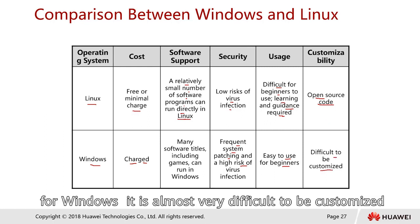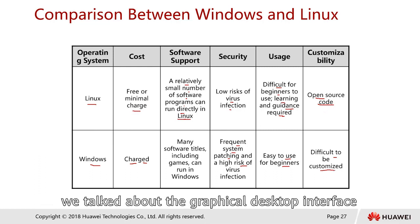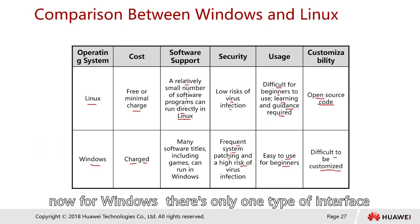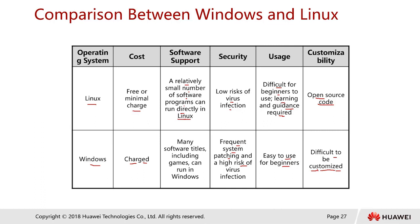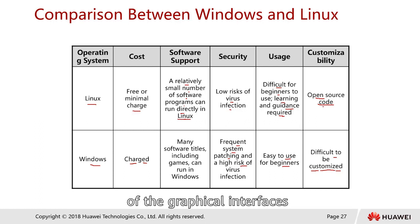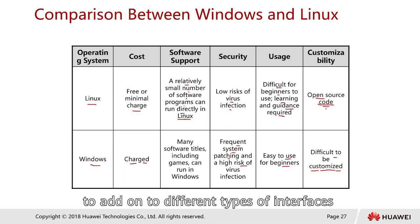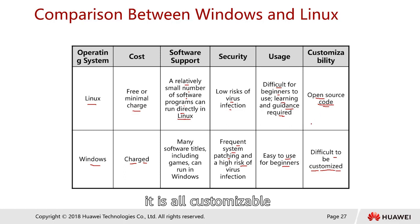In terms of customizability, Linux's open source code is almost fully customizable. Windows, on the other hand, is very difficult to customize. For example, with Windows there is only one type of desktop interface, whereas Linux offers many different choices of graphical interface — you can add on different types of interfaces, and it's all customizable.